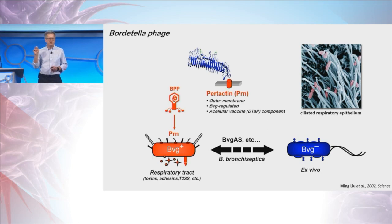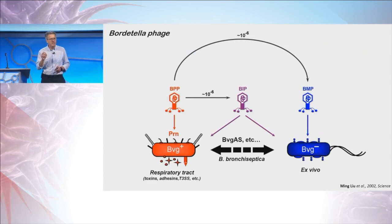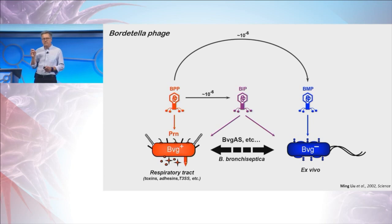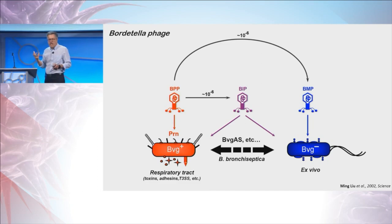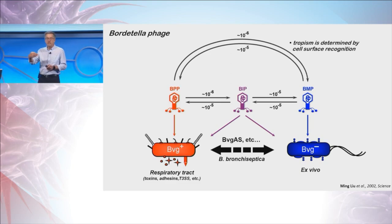These phage recognize a surface protein called protactin, an outer membrane autotransporter that's also a component of our current acellular pertussis vaccines. But the situation was a little more complicated. Ming noticed that at a frequency of one out of a million, he could isolate variants that were tropic for the other phase of the organism — in this case for Bordetella bronchoseptica and ex vivo phase — or viruses that didn't seem to care. He also recognized that all of these forms were interconvertible, and that the tropism of the virus was determined by recognition of different ligands on the surface of their bacterial host cells.